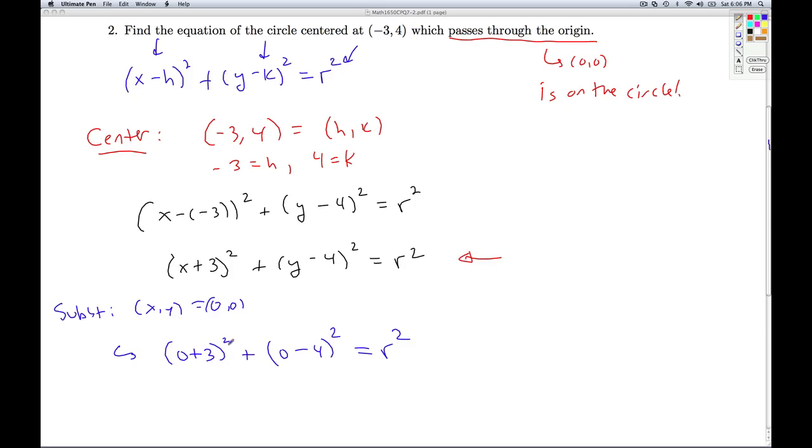Well, you square 3, you get 9. You square -4, you get 16. We're going to get r² is 25. So for my final answer, I've got (x + 3)² + (y - 4)² = r², which is 25. So that'll do it for Check Point Quiz 7.2.